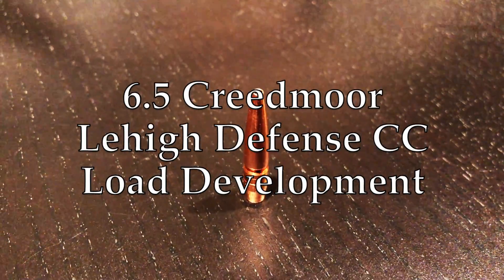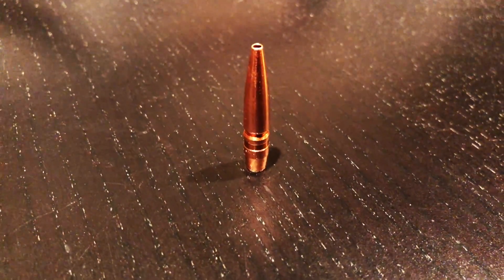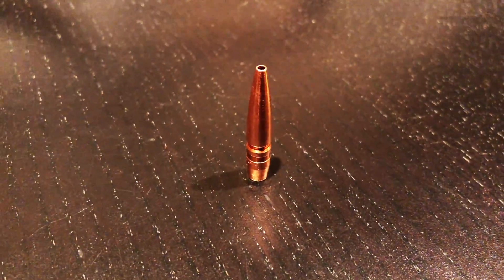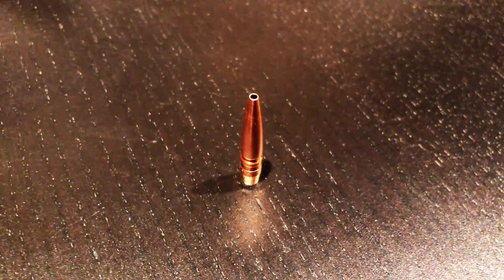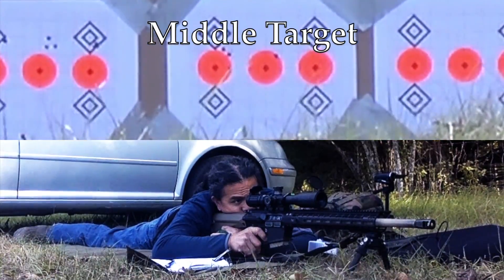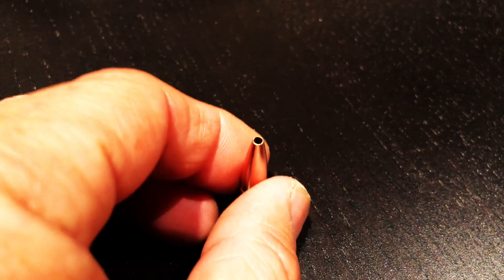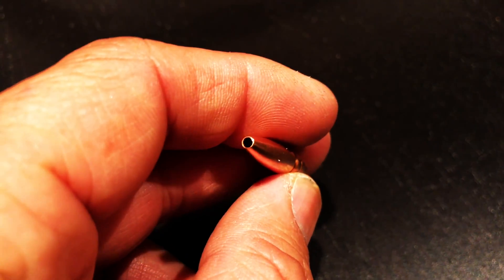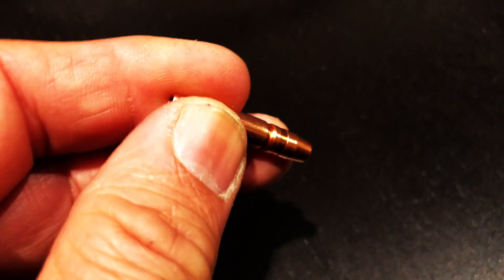This interesting bullet you're looking at is the Lehigh Defense 122 grain controlled chaos bullet built for the 6.5 Creedmoor. It is obviously a hollow point, but what you can't see is that it's tapered inside and I'll show you why in a second.